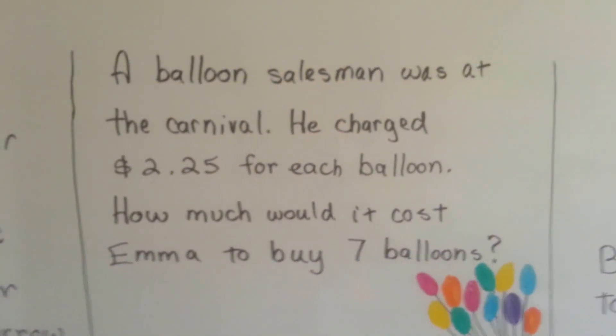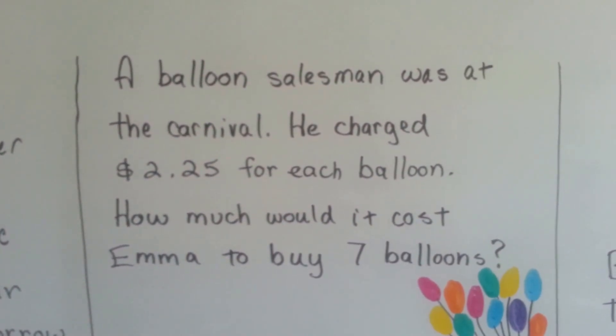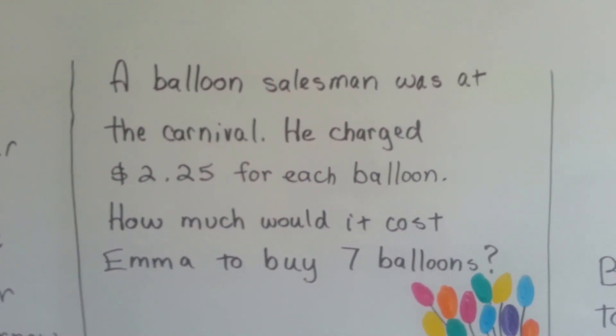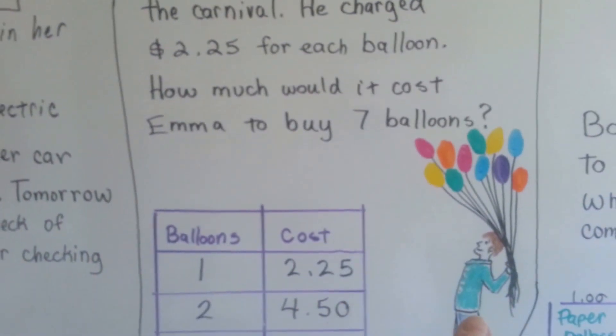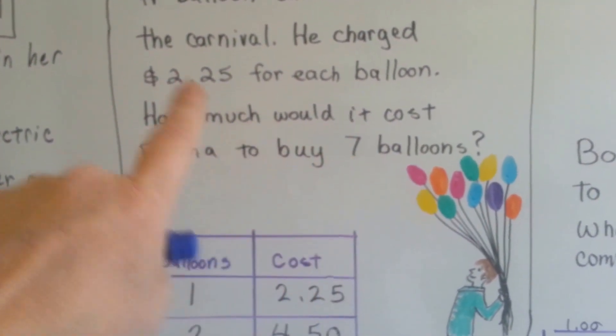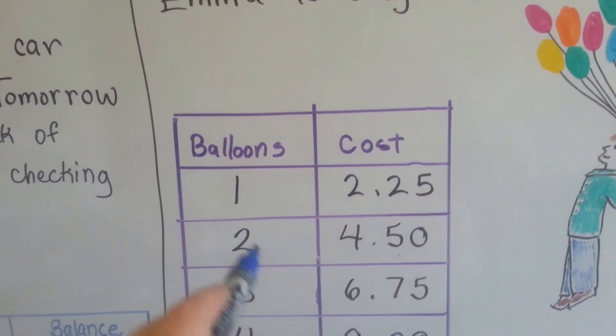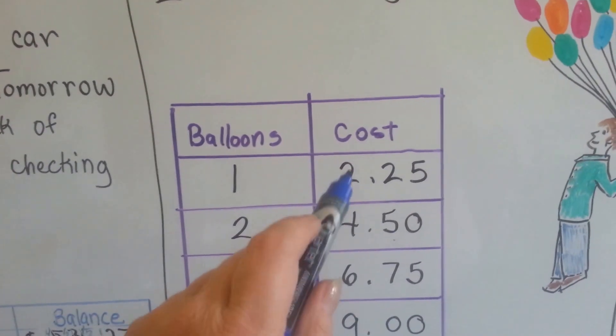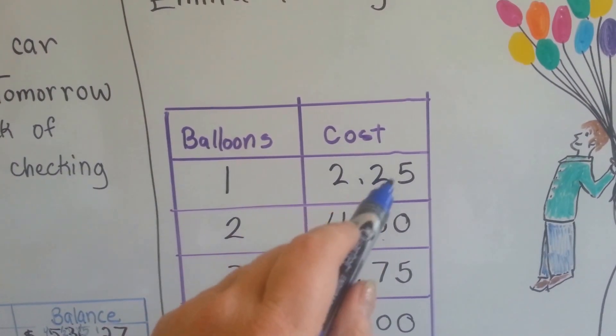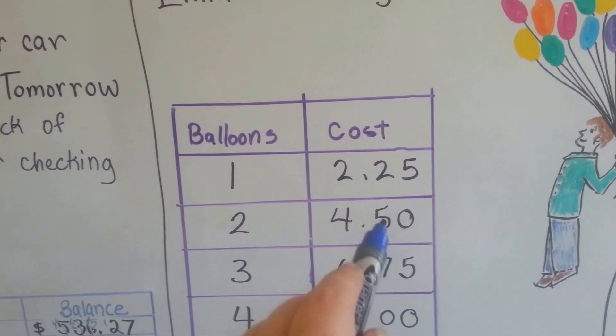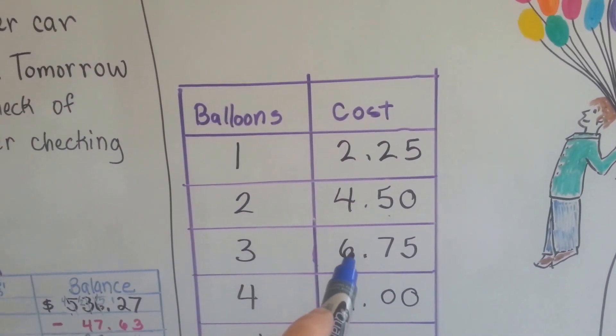A balloon salesman was at the carnival. He charged $2.25 for each balloon. How much would it cost for Emma to buy seven balloons? Remember, we're doing the strategy make a table. Here's our balloon salesman. Emma wants to buy seven balloons, so we made a table. One balloon is $2.25. Two balloons would be $2.25 more than this. Two plus two is four. And 25 and 25 is 50, because it's a benchmark for money.